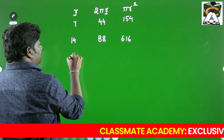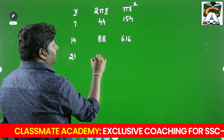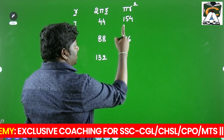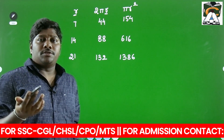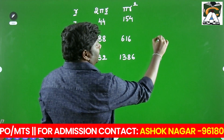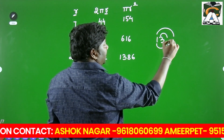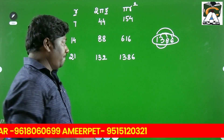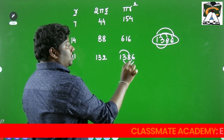When radius triples, the circumference triples as well: 44 × 3 = 132. The area becomes 9 times: 154 × 9 = 1386. How to remember 1386? Note that it is divisible by 9: 1+3+8+6 = 18, and also 3+6 = 9 and 1+8 = 9. So you can remember 1386 because it is divisible by 9.